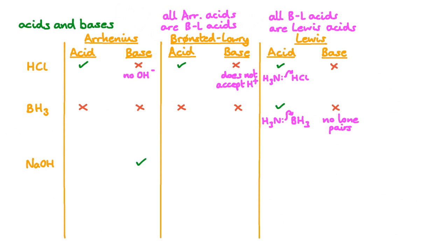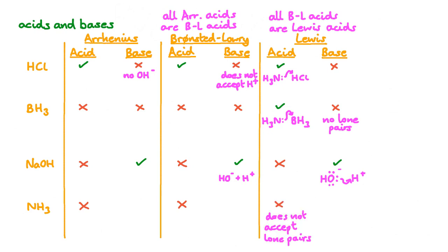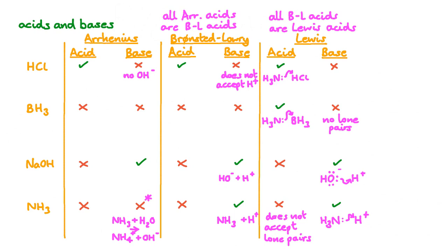What about NaOH? It's clearly an Arrhenius base. And we know it's a Bronsted-Lowry base because the hydroxide ion readily accepts protons. It's also a Lewis base, because it accepts protons by donating a lone pair forming a bond. But it's not acidic under any category. And next we have ammonia, NH3. Under normal circumstances, ammonia will not donate its protons, so we don't consider it Arrhenius acidic or Bronsted-Lowry acidic, and it's also not Lewis acidic. Ammonia doesn't fit the definition of an Arrhenius base either, since it doesn't have hydroxide ions to donate. However, ammonia does react with water, producing hydroxide ions in solution, and so acts like an Arrhenius base. Ammonia is definitely a Bronsted-Lowry base since it accepts protons, and since it does this using the lone pair to form the bond, it's also a Lewis base.